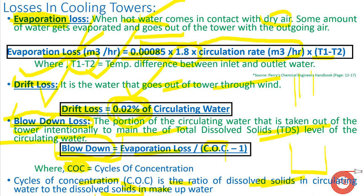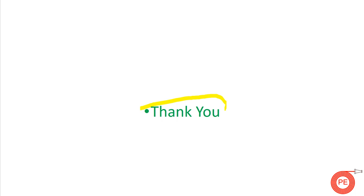Adding evaporation loss, drift loss, and blowdown loss together gives the total makeup water required. This makeup water must be added to the cooling tower periodically so it does not run short of water. I hope this gave you a good overview of cooling towers, their types, and how they work. For more videos and updates, please like, follow, and subscribe to our channel. Thank you for watching!